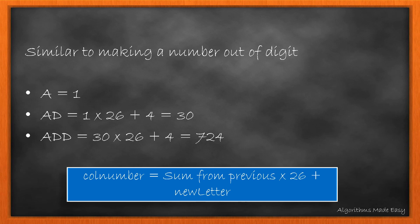So, A becomes 1, B becomes 2 and so on. Then AD becomes 1 × 26 + 4 which is 30, and ADD becomes 30 × 26 + 4 that gives us 784.